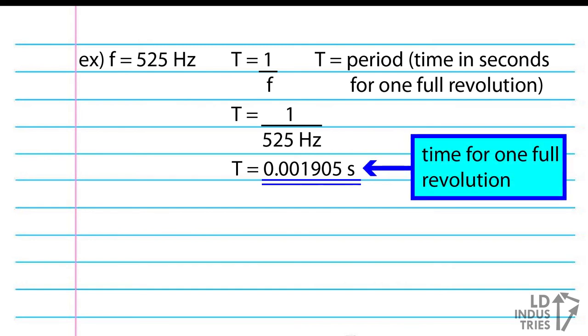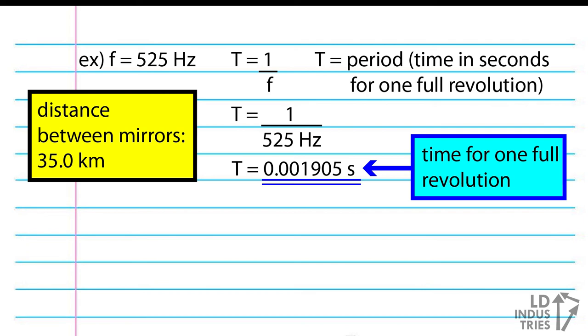But in this experiment, we're only concerned with the time it takes to make an eighth of the revolution, as this is the amount of time needed to let the beam of light move 35 kilometers there and 35 kilometers back.